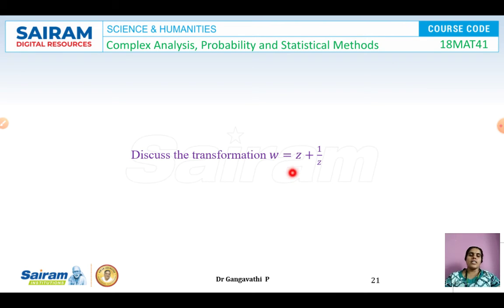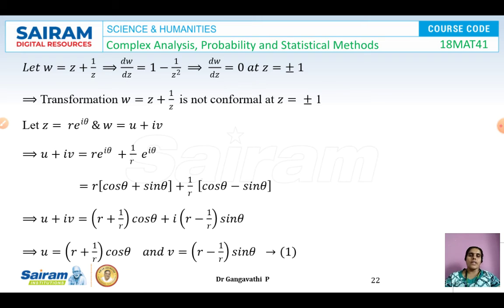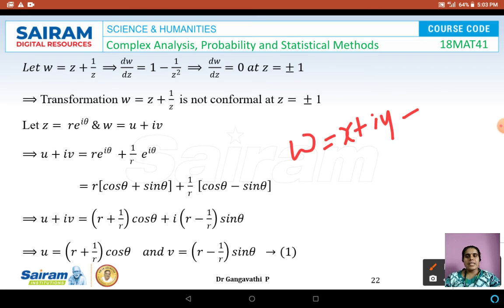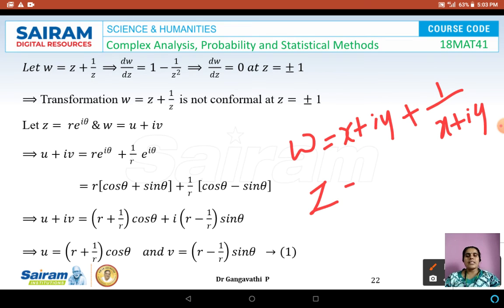Now let us discuss the transformation w = z + 1/z. Computing dw/dz = 1 - 1/z², which equals zero at z = ±1, so the transformation is not conformal at those points. Since the Cartesian form would be complicated due to z in the denominator, we use polar form: z = re^(iθ). This makes the calculation simpler.